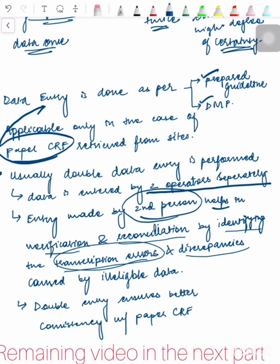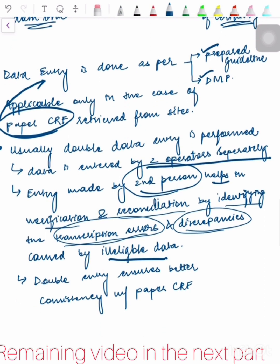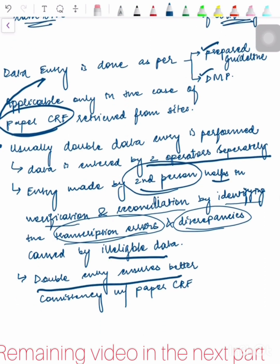It helps by identifying transcription errors and discrepancies caused by illegible data, because we want our data to be as complete and accurate as it could be. Double entry ensures better consistency with Paper CRFs. I hope it's clear to you and it's all making sense right now.